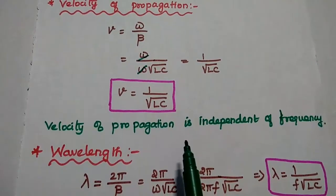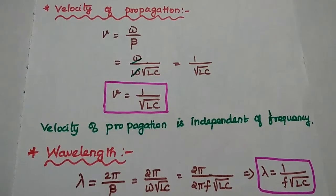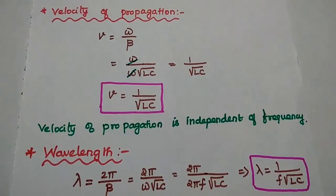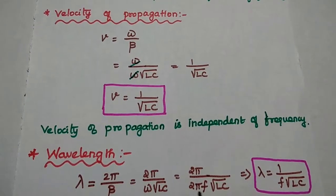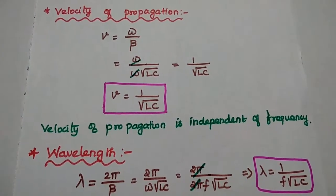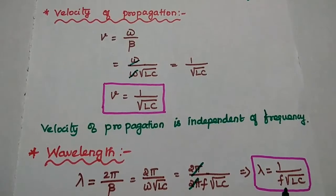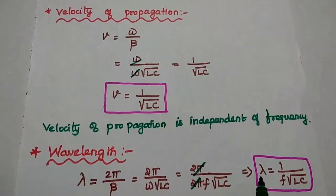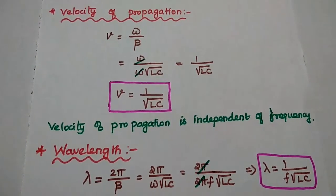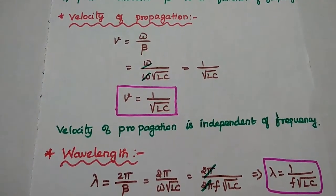Finally, we can find out the wavelength, which equals 2 pi by beta. Substituting the value of beta, we get 2 pi by omega into square root of LC. Since omega equals 2 pi F, dividing these two values gives lambda equal to 1 by F times square root of LC. Lambda is always inversely proportional to frequency. These are the line constants for zero dissipation line.